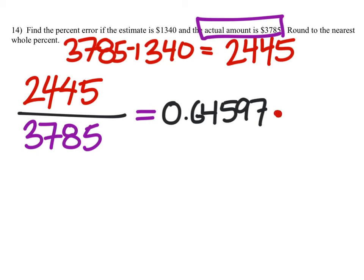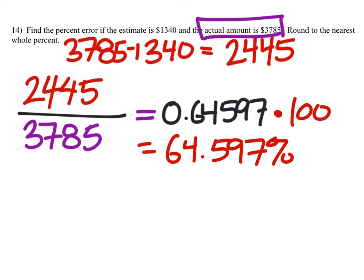So to change this to a percent, I will multiply this by 100, and I get 64.597%. This one did tell us specifically to round to the nearest whole percent. So that would be 65%.